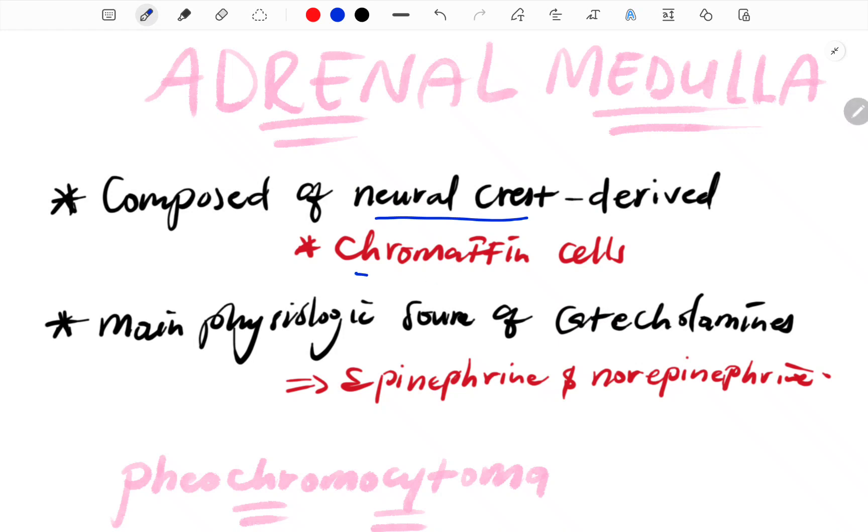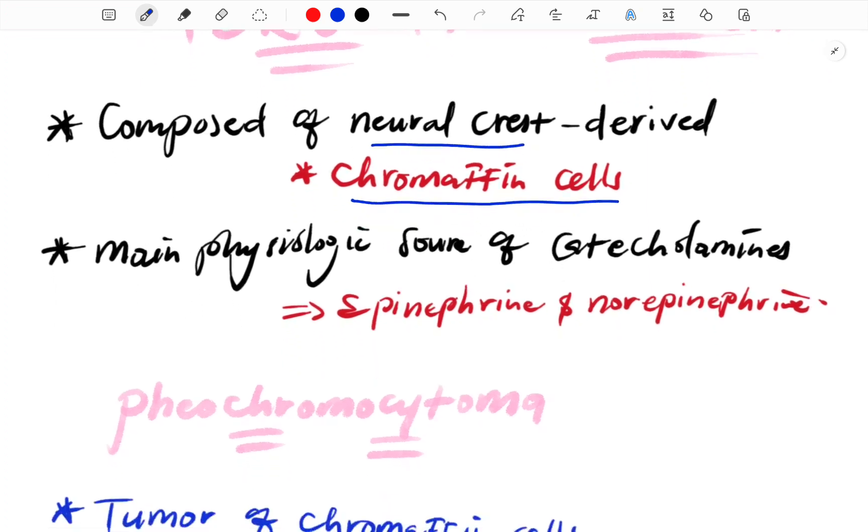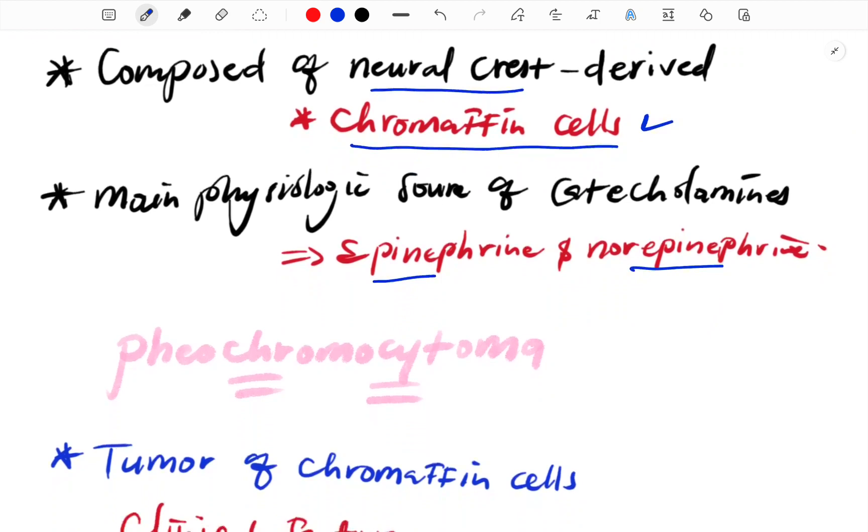If we have chromaffin cells, they produce catecholamines. The chromaffin cells use epinephrine and norepinephrine as their main catecholamines. They are using epinephrine and norepinephrine as neurotransmitters.